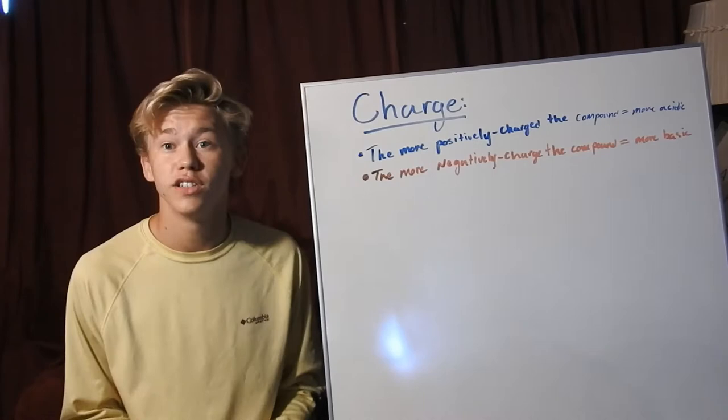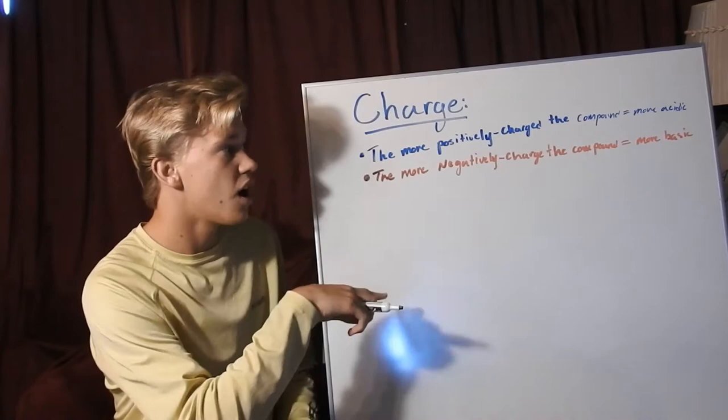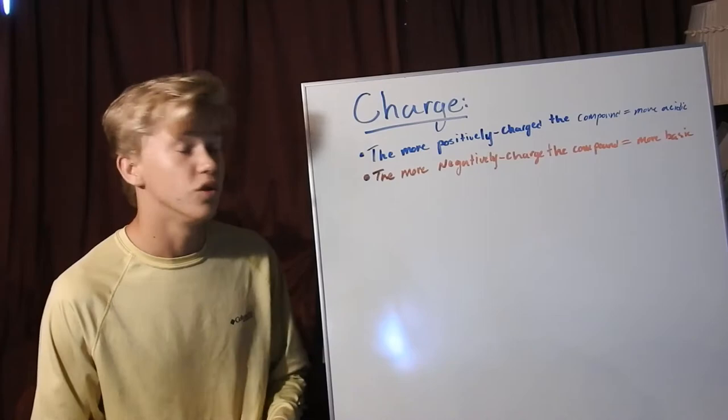So first we'll go over C, which stands for charge. This will be one of the easiest of the concepts to understand for judging acid and base acidity. The more positive charge the compound, the more acidic it will be, while the more negative charge compounds will be more basic.